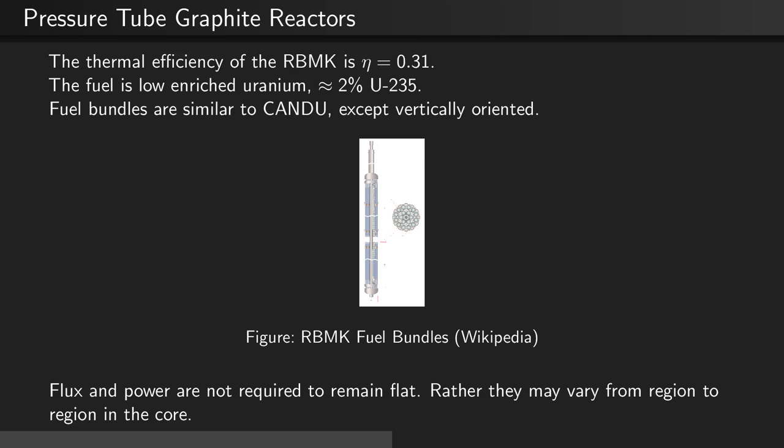Unlike other reactors, flux and power are not required to remain flat in an RBMK. Rather, flux and power may vary from one region to another within the core.